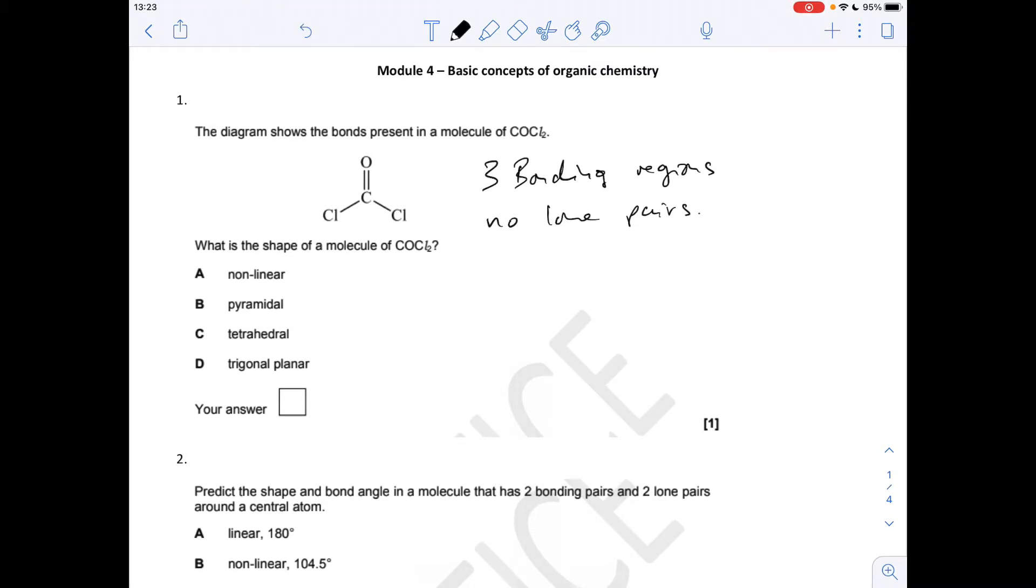Okay, so the first one, we've got three bonding regions around that central carbon. Just remember that a double bond counts as one region. We don't have any lone pairs. Carbon's used all four of its valence electrons in these bonds. One for that chlorine bond, one for that one, two in the double bond. So there's no lone pairs, so we'll get equal repulsion of the three bonding regions, and that leads to a trigonal planar shape, so it's D.